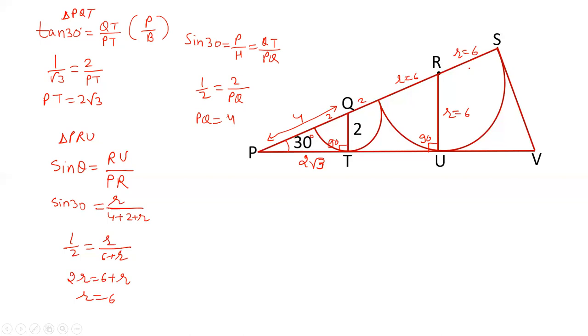Now finally we will calculate SV. Again this angle is 90 degrees because these are tangent and the circle, so radius and tangent are perpendicular. So in triangle PSV we can apply tan theta. It will be SV upon PS. Tan 30 means tan 30. SV suppose it is x. Now PS, check this: PS is PQ plus QR plus RS. Tan 30 is 1 by root 3. So PQ is 4, QR is 2 plus 6, and RS is also 6.